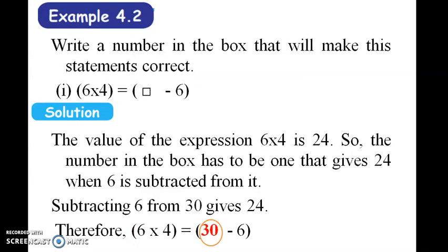Another example: Write a number in the box that will make this statement correct. (6 × 4) = (□ - 6). The value of the expression 6 × 4 is 24. So the number in the box has to be one that gives 24 when 6 is subtracted from it. Subtracting 6 from 30 gives 24. Therefore, (6 × 4) = (30 - 6).